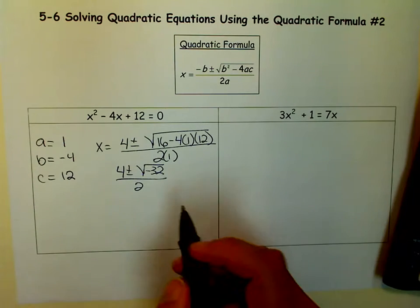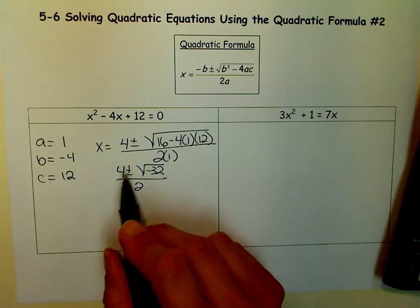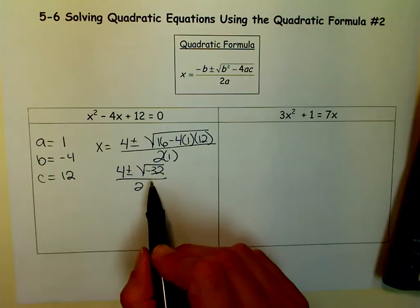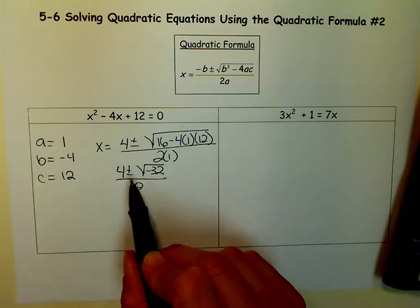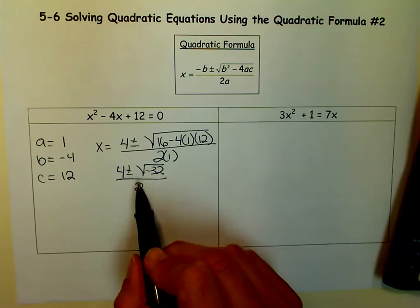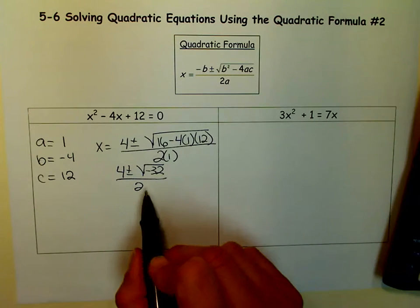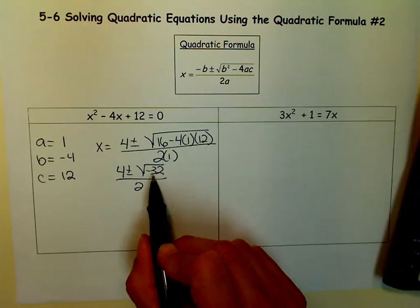Well, you've already learned about complex numbers if you're in Algebra 2 and doing this. If you're in Algebra 1, we would usually say there aren't any solutions. It is true that there aren't any real solutions, but now that you've learned complex numbers, you can go ahead and simplify this square root.